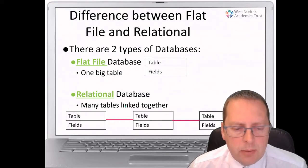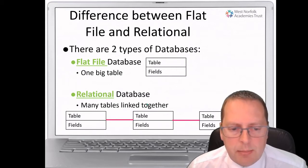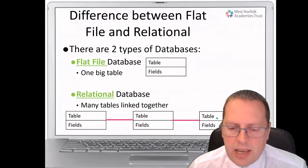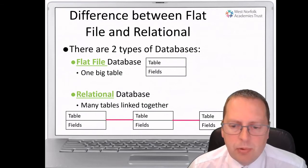When I mentioned the library database earlier, they might have a table on all the customers or people who hire out books, a table on all the books themselves, and a table on all their staff. So different tables all linked together.